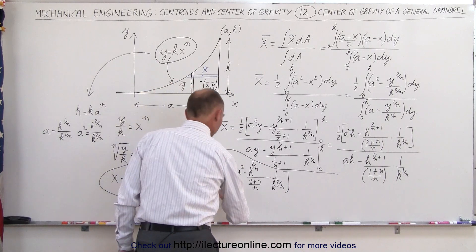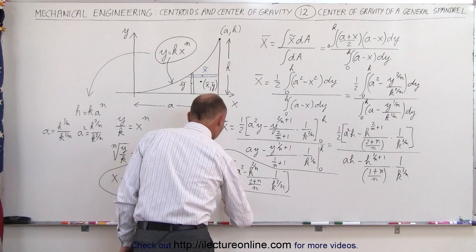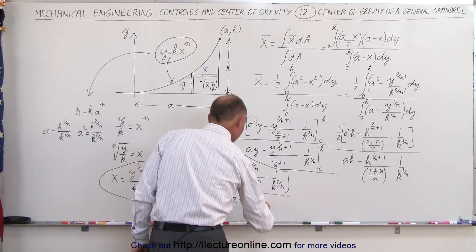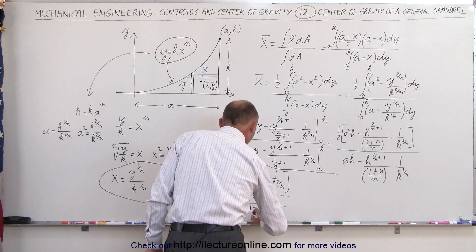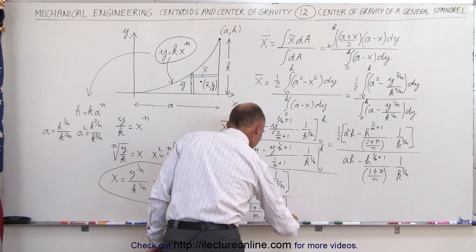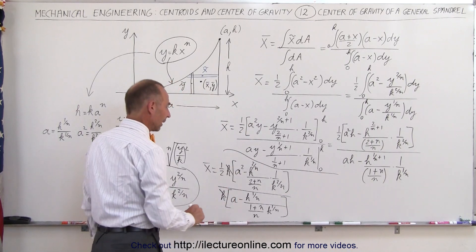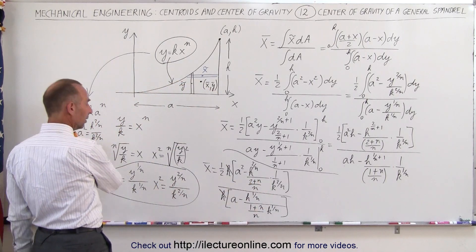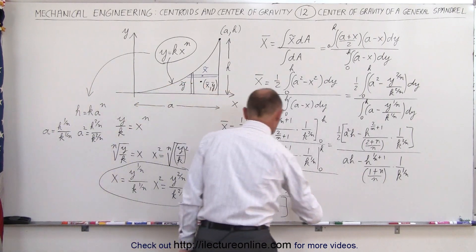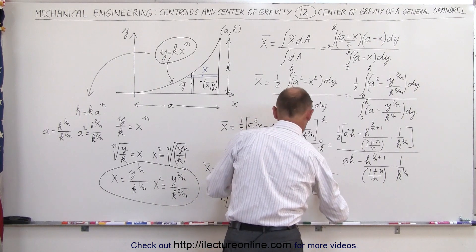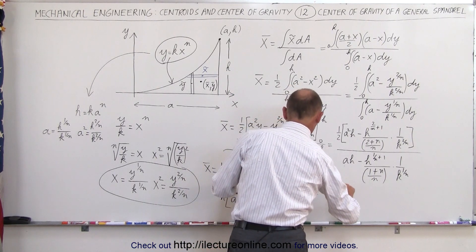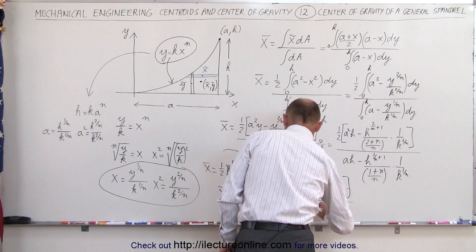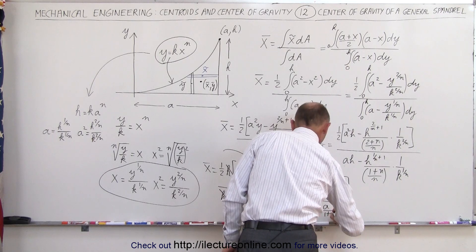In the denominator, we factor out an h, leaving h times a minus h to the 1/n power divided by (1+n)/n times k to the 1/n. The h's cancel out, and since h to the 2/n divided by k to the 2/n equals a², we can replace that term by a², and h to the 1/n divided by k to the 1/n by a. This becomes 1/2 times a² minus a² divided by (2+n)/n, all over a minus a divided by (1+n)/n.